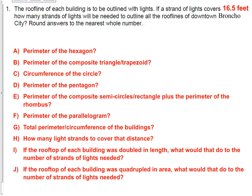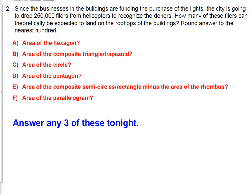Today's assignment is going to be this: since the businesses in the buildings are funding the purchase of the lights, the city is going to drop 250,000 flyers from helicopters to recognize the donors. How many of these flyers can theoretically be expected to land on the rooftops of the buildings? Round answers to the nearest hundred.